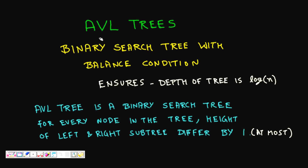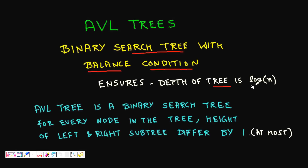In this lecture we are going to learn about what is known as AVL trees. An AVL tree is a very famous binary tree — in fact it is a binary search tree, but it has something more: a balanced condition. It is a binary search tree that is balanced, which means the heights of the subtrees are balanced, and it ensures that the depth of the tree is O(log n), where n is the number of nodes.